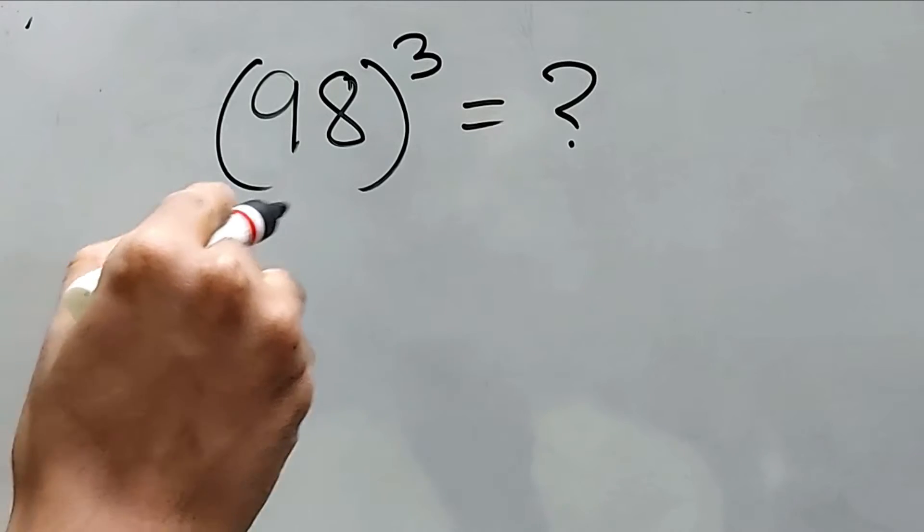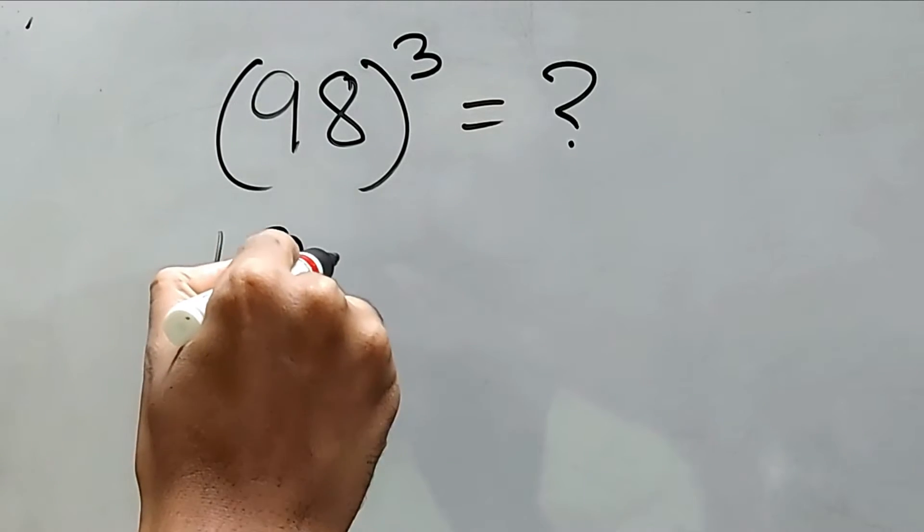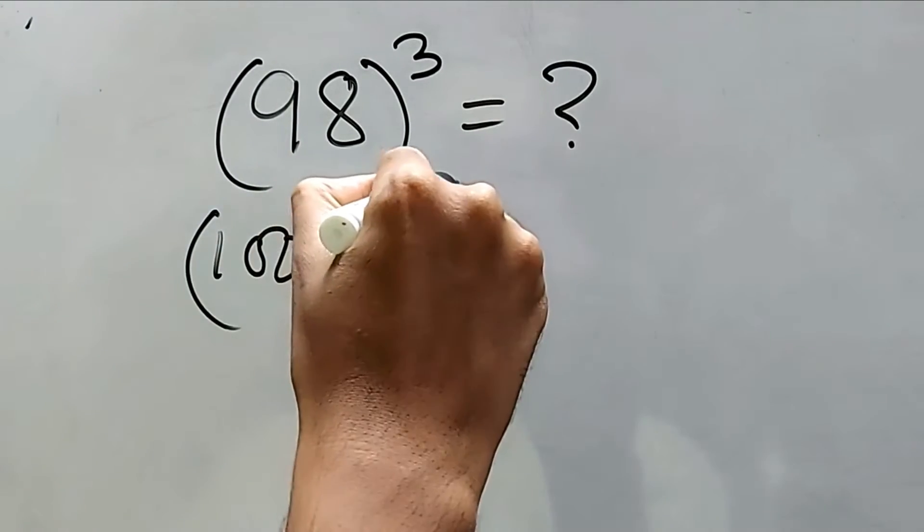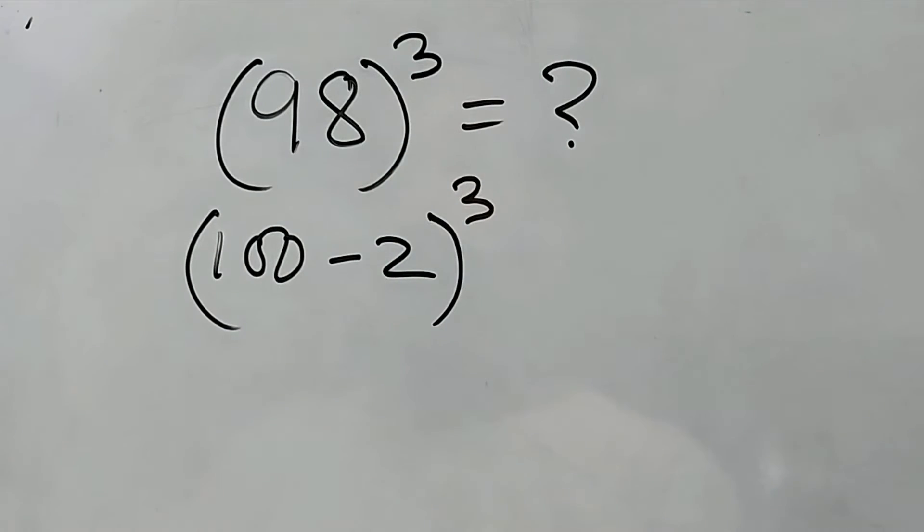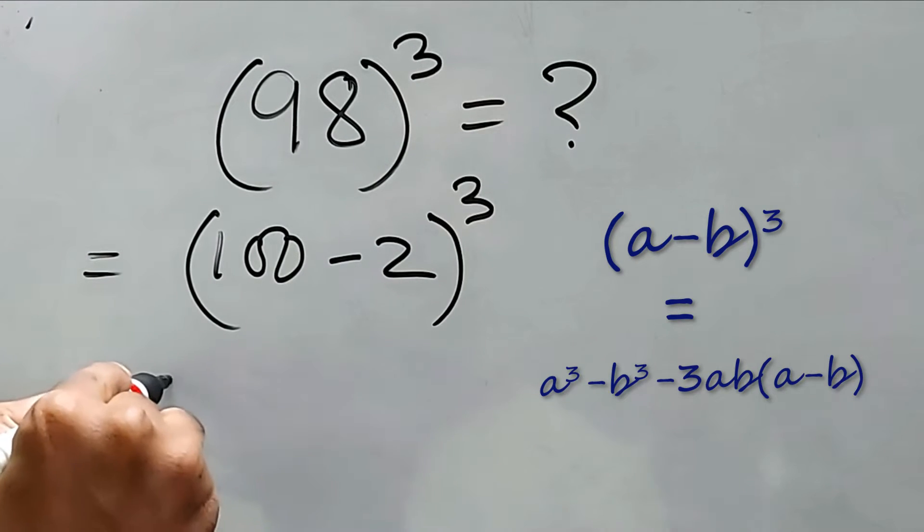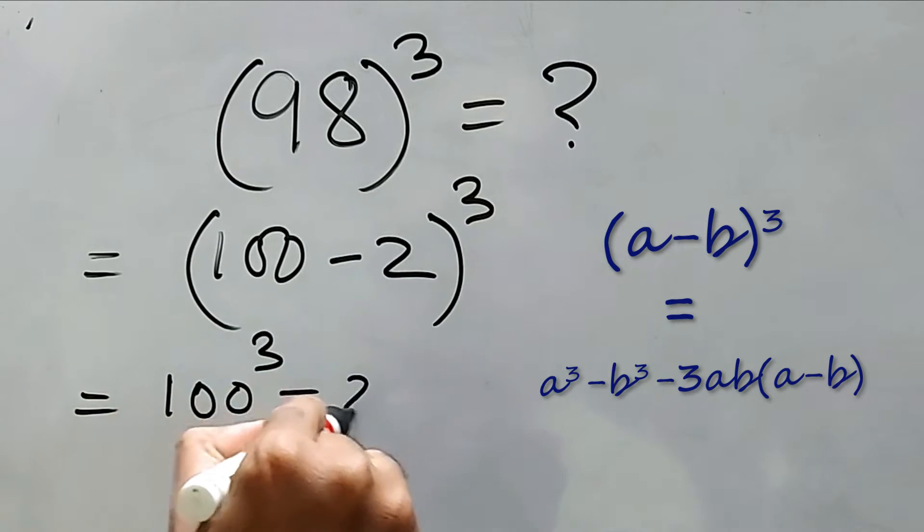Whenever you're getting a number nearest hundred, you just have to do it this way: like 100 minus 2, right? And whole cube. We know the formula of a minus b whole cube.